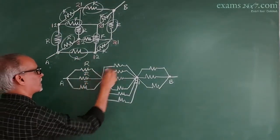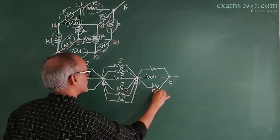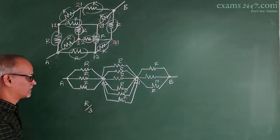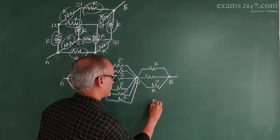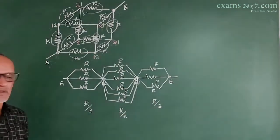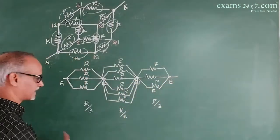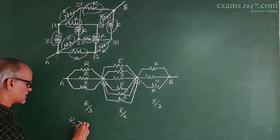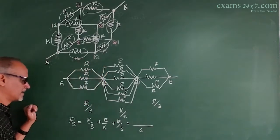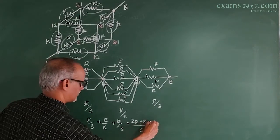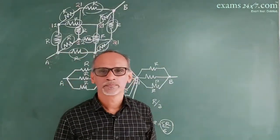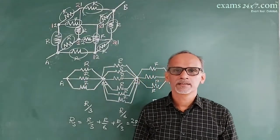For 3 identical resistors R in parallel, the effective resistance is R/3. For 6 identical resistors in parallel, the effective resistance is R/6. These three combinations are in series, so the total effective resistance Rs equals R/3 plus R/6 plus R/3. With LCM 6, this becomes 2R/6 plus R/6 plus 2R/6, which equals 5R/6. So the effective resistance between opposite corners A and B of the cube is 5R/6.